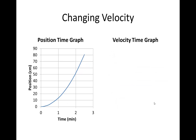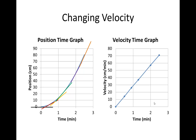Here we have a position time graph where you have a changing velocity — in this case, an increasing velocity. You take slopes of the tangent line segments in order to find the values on the velocity time graph. Those give you those points, and then you have a straight line that goes through them. So a curved line on a position time graph is going to look like a straight line on a velocity time graph, but the line is going to have some kind of a slope, positive or negative.